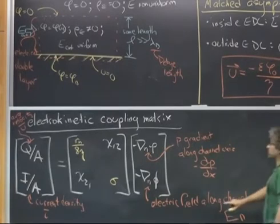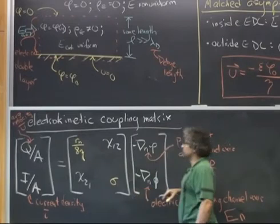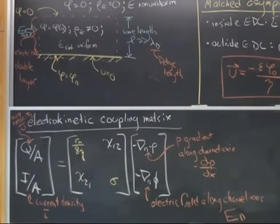Now what we want to do, and these are things that we could have done before we started talking about electroosmosis. But now we want to take what we've gotten from electroosmosis and plug it into this framework. So if I have determined what the magnitude of the electroosmosis is, where will it go into this matrix? Right, it's going to go into chi-1-2.